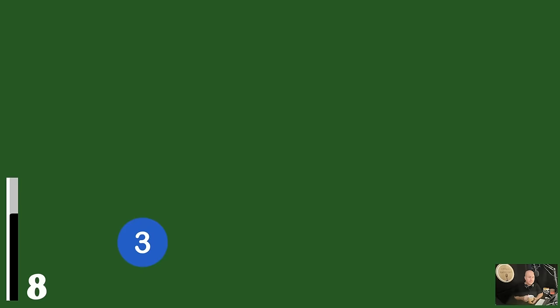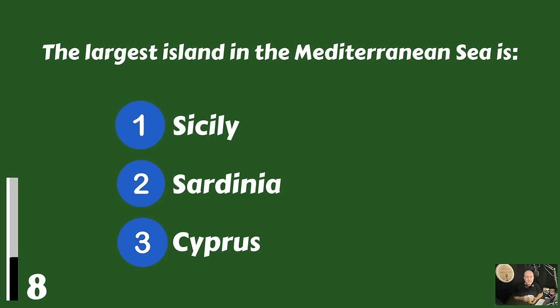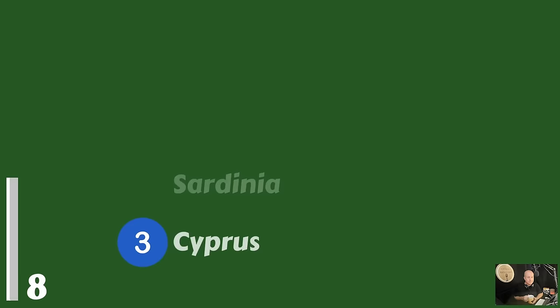The largest island in the Mediterranean Sea — is it Sicily, is it Sardinia, or is it Cyprus? That would be Sicily.